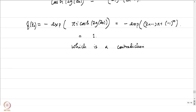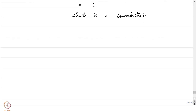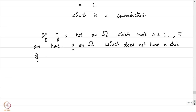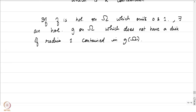So effectively what we have proved is the following. If f is holomorphic on omega and omits 0 and 1, there exists a holomorphic function g on omega which does not have a disk of radius 1 contained in g(ω). This is precisely what we have proved. So if f is a function on some simply connected set which omits 0 and 1, this is precisely what we have.